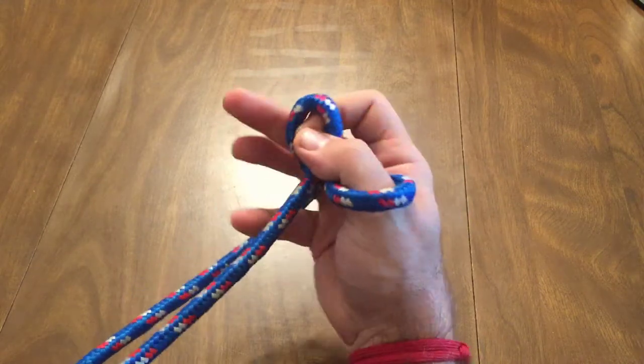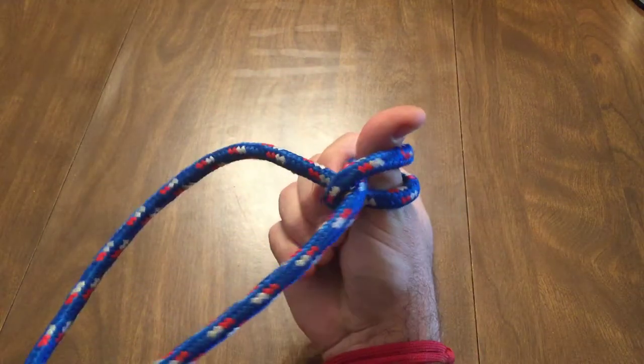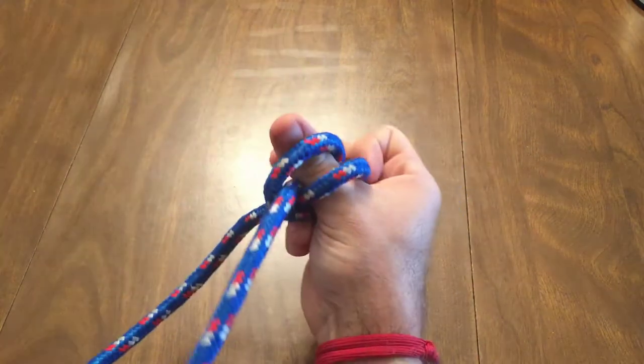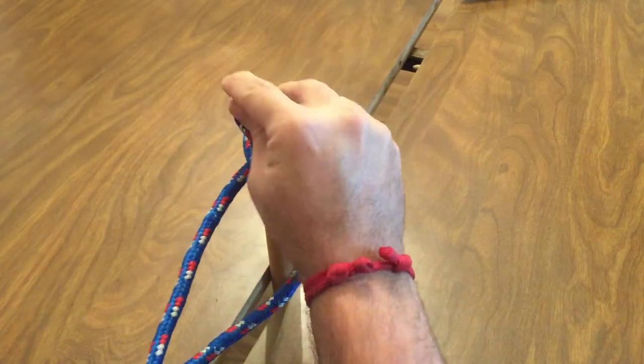At this point bring your thumb and index finger together. Now you have a clove hitch tied to your thumb or you can place the two loops over a post.